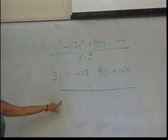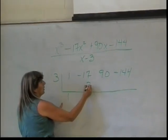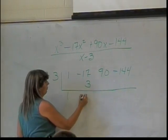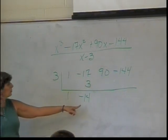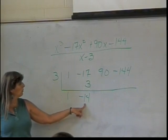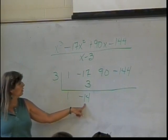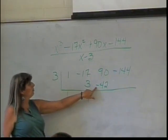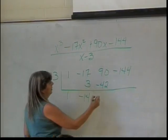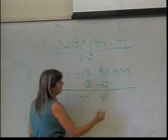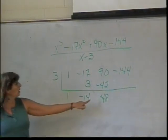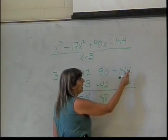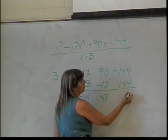Then I multiply 3 times 1 and get 3. Write that under my negative 17. Negative 17 plus 3 is negative 14. Then I have 3 times negative 14, which is negative 42. 90 plus a negative 42 is a positive 48. And then 3 times 48 is 144. And negative 144 plus 144 is 0.